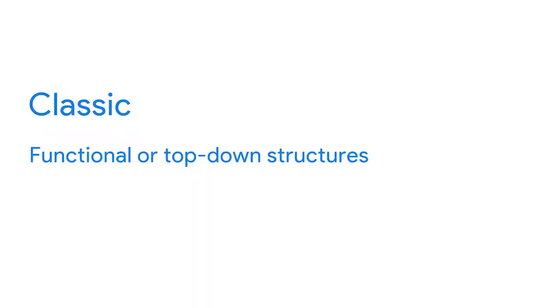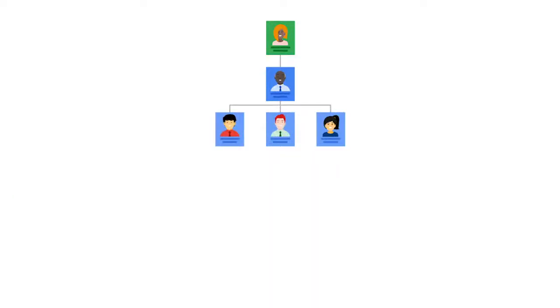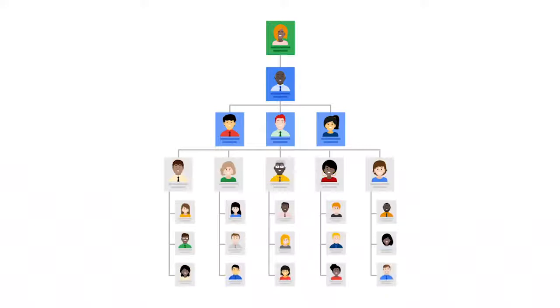There are a few different types of organizational structures, but for this course, we're going to focus on two of the more popular ones: classic and matrix. Let's start with classic. The classic grouping includes what are usually called functional or top-down structures. It follows a typical chain of command where the chief executive officer, also known as CEO, and other executives are at the top, followed by directors or managers, then their direct reports, and so on. Each of these directors or managers typically oversees teams within their function of the organization, like marketing, sales, or human resources.